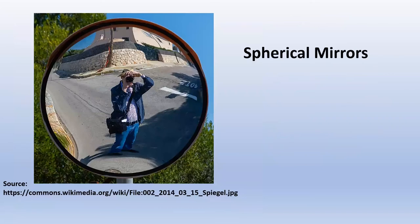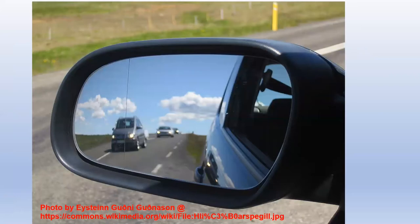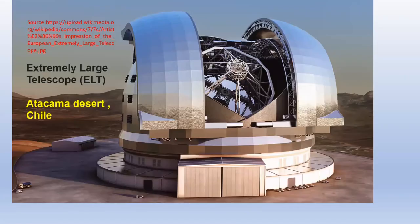Now let us discuss spherical mirrors. We see in our day-to-day life, spherical mirrors at various places. This is a mirror kept on the roadside. This is a convex mirror used in a vehicle. This is a concave mirror which is used in a telescope. This is an extremely large telescope present in the Atacama Desert in Chile. We can see how big the mirror is — look at the trucks and cars near the entrance, which are so tiny when compared to the mirror.